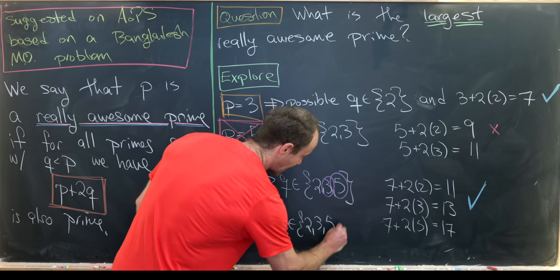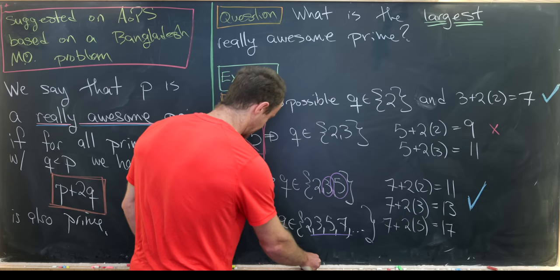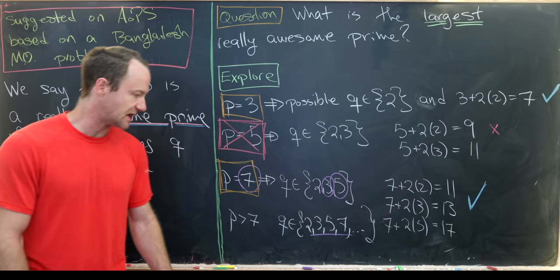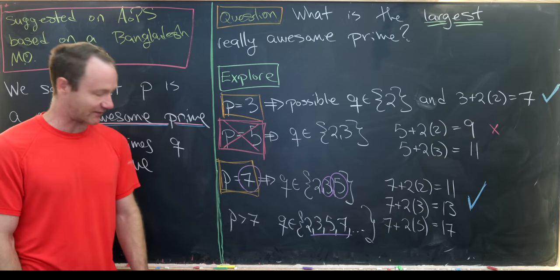But then we'll have to calculate p plus 2 times 3, p plus 2 times 5, and p plus 2 times 7. And perhaps that would come up with an issue just like it does in that proof of only finitely many prime triples.